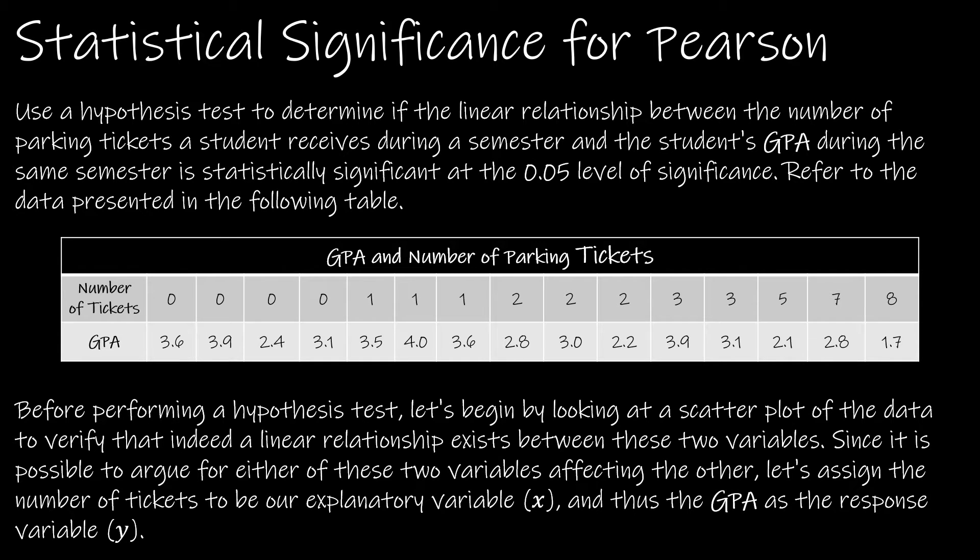We're going to take a look at an example together. We're going to use the hypothesis test to determine if the linear relationship between the number of parking tickets a student receives during a semester and the student's GPA during the same semester is statistically significant at the 0.05 level of significance. Before we actually do the test, I'm going to create a scatterplot with you. It's always a good idea to create a scatterplot so that you can verify that there is, in fact, a linear relationship, because if there's not a linear relationship, we do not want to move forward with any of these tests.